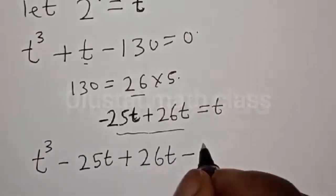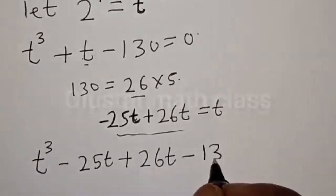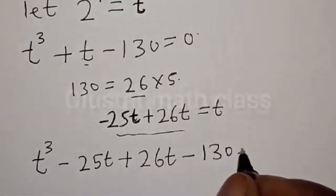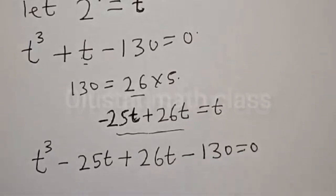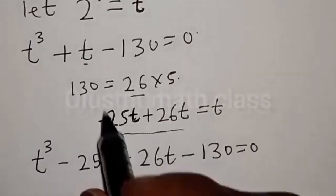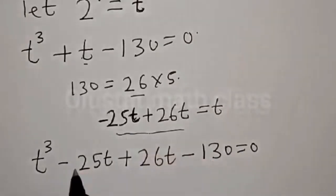We replace and rewrite: t cubed minus 25t plus 26t minus 130 equal to zero. This does not change the equation since minus 25t plus 26t still gives the same t.